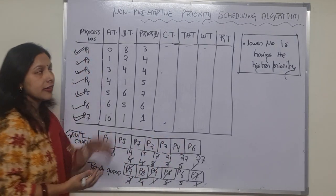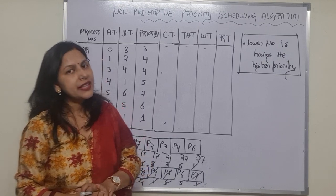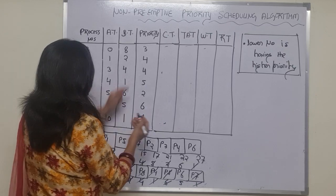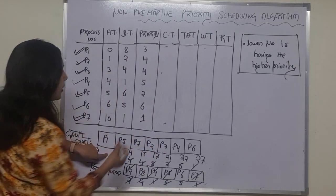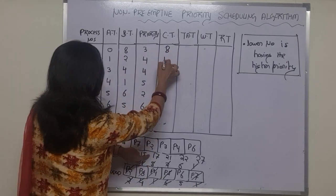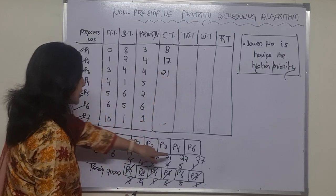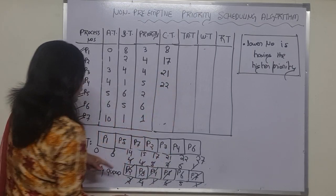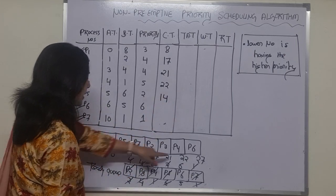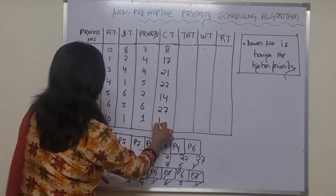Based on the Gantt chart, we calculate the completion times. For P1 it is 8, for P2 it is 17, for P3 it is 21, for P4 it is 22, for P5 it is 14, for P6 it is 27, and for P7 it is 15.